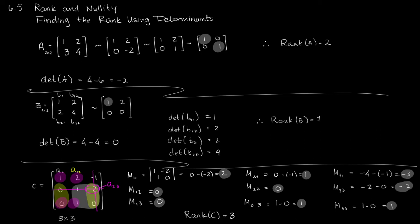I'll row reduce this matrix off screen. Sure enough, this row reduces — it is row equivalent to 1, 0, 0 / 0, 1, 0 / 0, 0, 1. That's easy to do on the calculator, and in some cases that's going to be an easier process than finding all these minors. Because I have found three pivots here, that confirms that the rank of this matrix is 3.